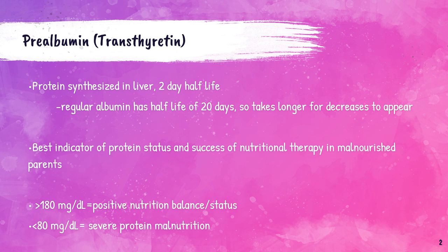If somebody becomes malnourished, because the prealbumin has a shorter half-life, meaning it will be eliminated from the body quicker than albumin, the prealbumin level will be lower than the albumin level. This is why prealbumin is the best indicator of protein status for patients. If a patient has a prealbumin level greater than 180 mg per deciliter, this is a normal nutritional balance. Less than 80 indicates a severe protein malnutrition in the patient.